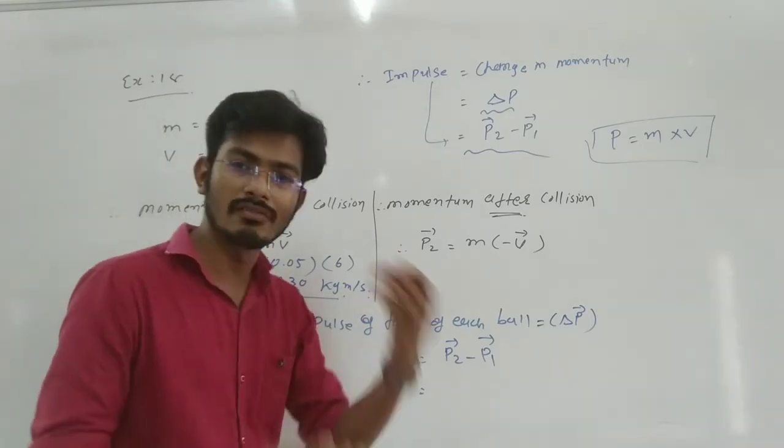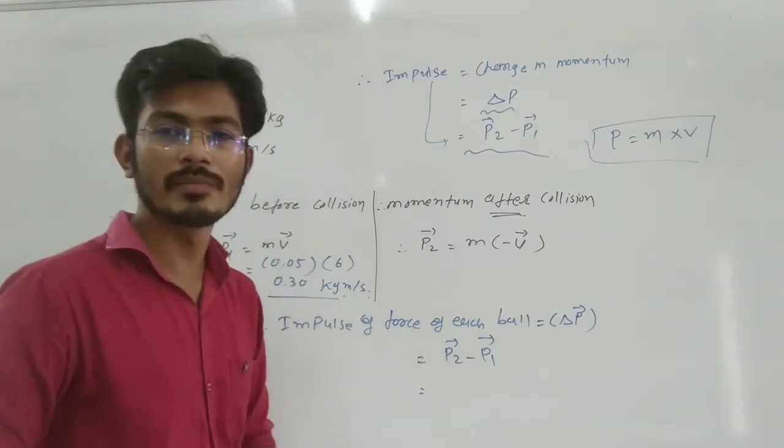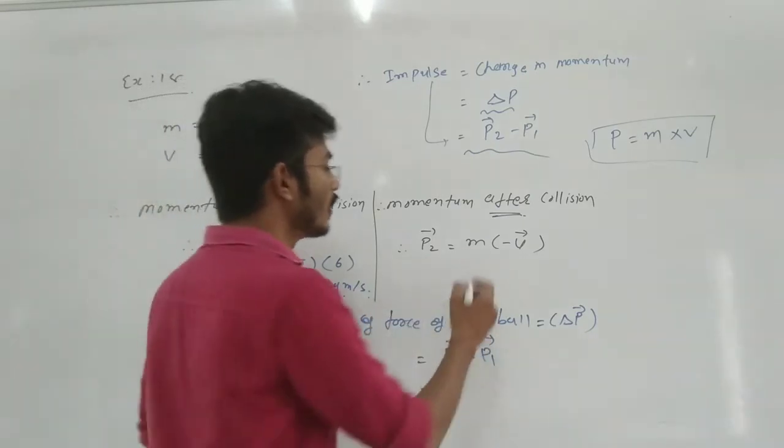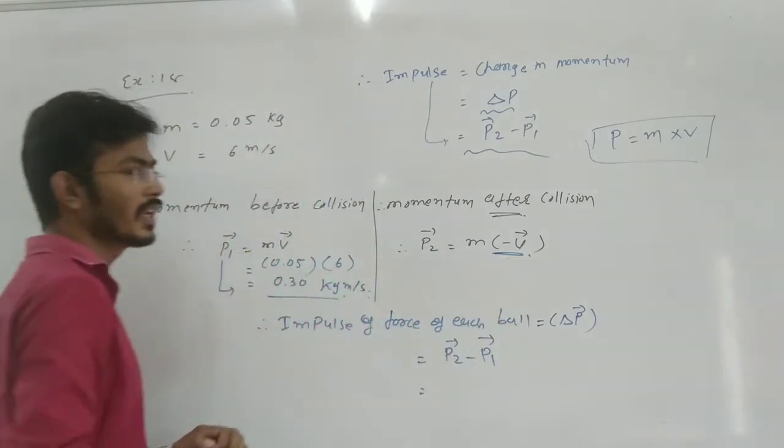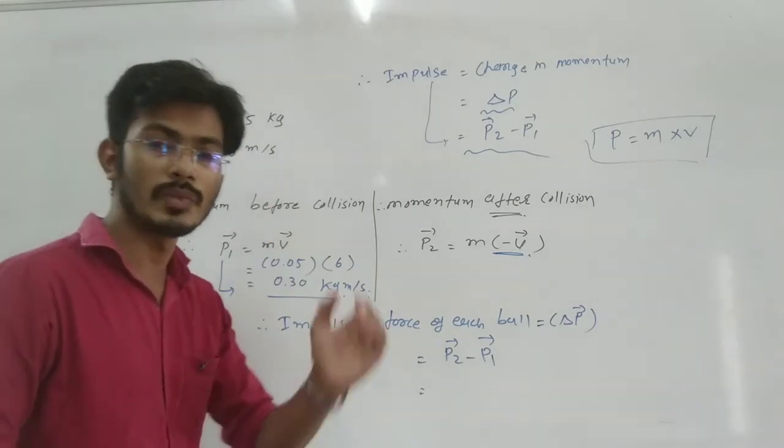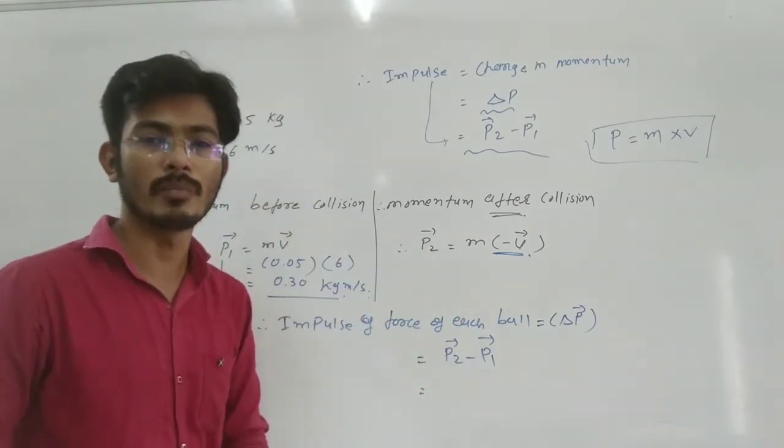Now we have to find out after the collision, that means momentum p2 we can say. So p2 is equal to m multiplication minus v. We have to find out the same speed, but after the collision we have to consider minus.